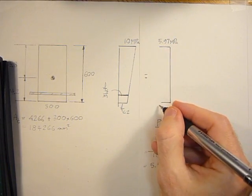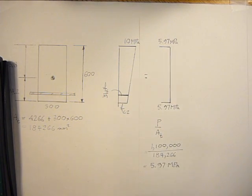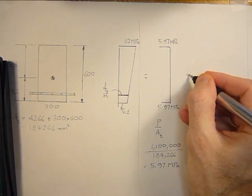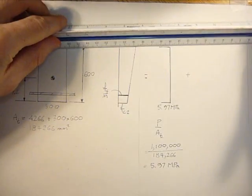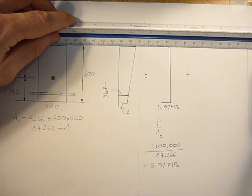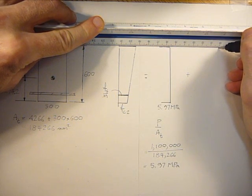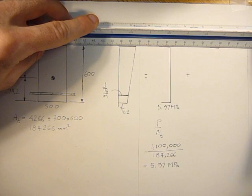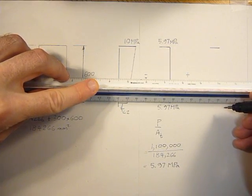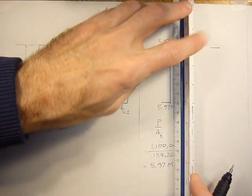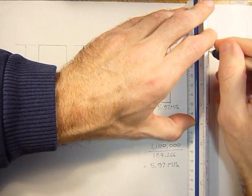And because it's pure compression, it's the same top and bottom on the section. Now, these aren't equal, so we have to add another stress distribution to it, to equalize it. And this will be a pure moment now, we'll add to the section.